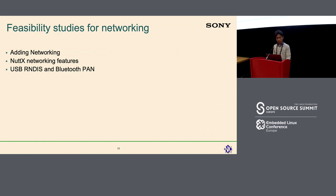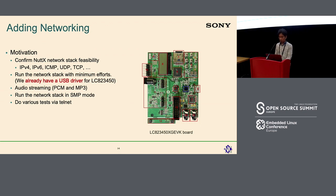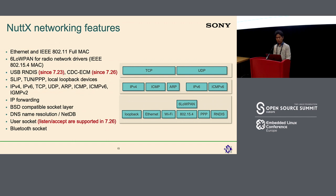The next topic is networking. The motivation for adding networking was to confirm NATX network stack feasibility. This ON Semiconductor evaluation board does not have Ethernet but has USB, so I decided to use a USB RNDIS driver with this board to test audio streaming in SMP mode. NATX supports many networking features such as Ethernet, Wi-Fi, USB RNDIS, IPv4 and IPv6. You can use the BSD socket API as well as select and poll interfaces to wait for events from a socket. So it's very easy to port a socket-based application to NATX.